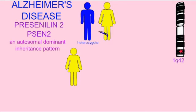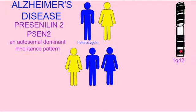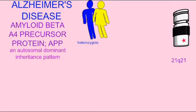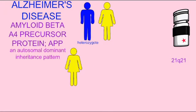These abnormal fragments contribute to Alzheimer's disease. In all three of these cases, mutations are inherited in an autosomal dominant fashion in which a heterozygote will pass the increased Alzheimer's risk to half of their children.